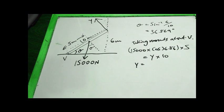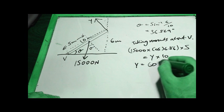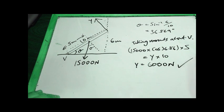And if you do all of that, you should get Y is equal to, so 15,000 times by cos 36.869 gives me 12,000, 12,000 times 5 gives me 60,000, 60,000 divided by 10 gives me 6,000, so Y is 6,000 newtons, which is the correct answer, it seems. So that's alright.